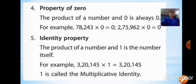The fourth property is the property of zero: the product of a number and 0 is always 0 — any number multiplied by 0 is always 0. The fifth property is the identity property: the product of a number and 1 is the number itself — any number multiplied by 1 is the number itself, where 1 is called the multiplicative identity.